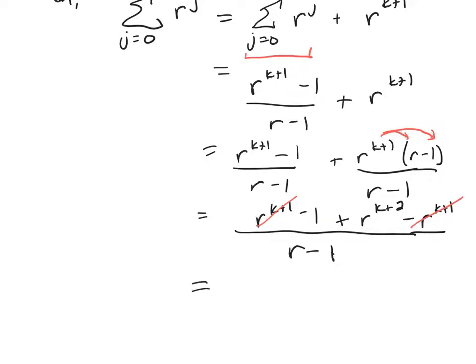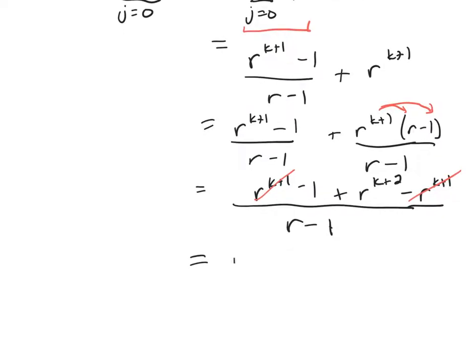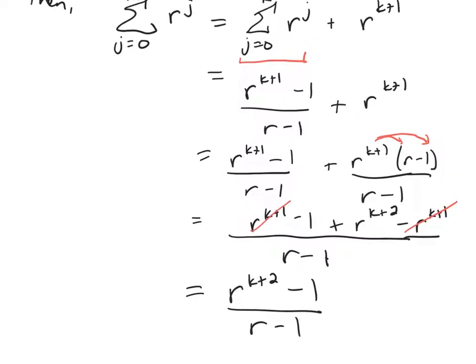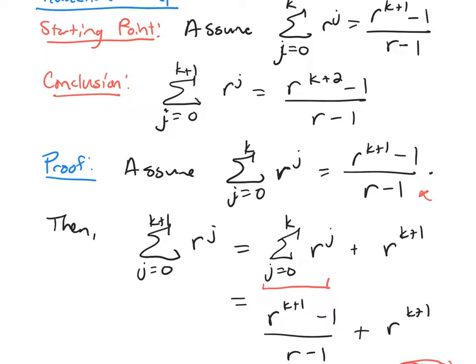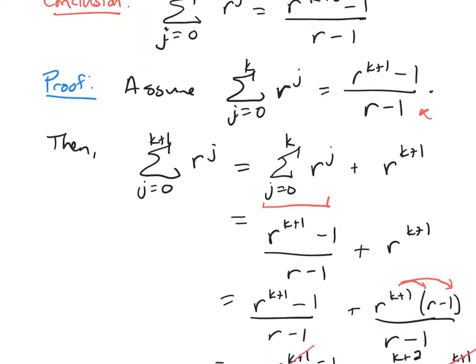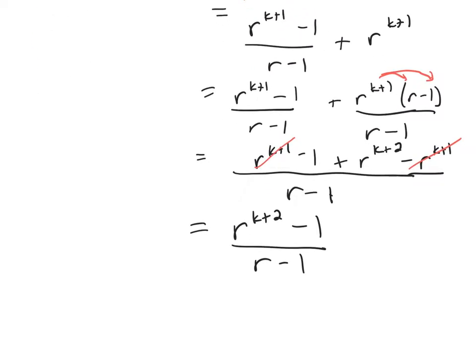And if I reorder the terms in the numerator, r to the k plus 2 minus 1 over r minus 1. And if you look back at our conclusion, that's what I needed to get to. k plus 2 minus 1 right there. So this completes my proof.